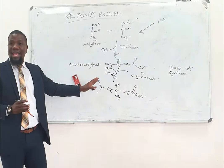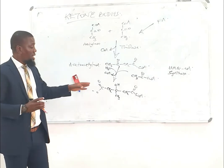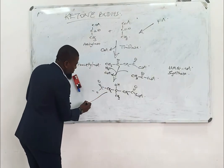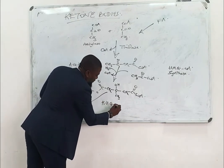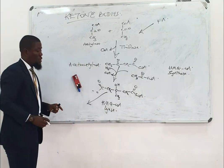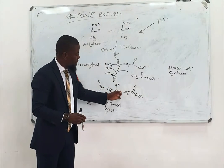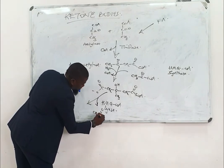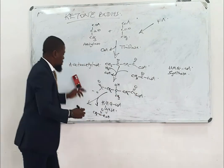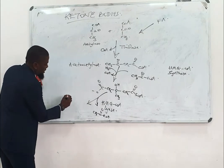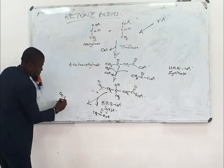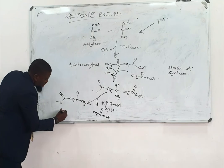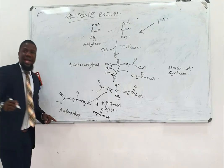Once HMG-CoA has been produced, the next reaction is that it is worked upon by a lyase called hydroxymethylglutaryl-CoA lyase. What this enzyme will do is remove an acetyl-CoA — CH3-CoA goes off — and the end product is going to be acetoacetate.